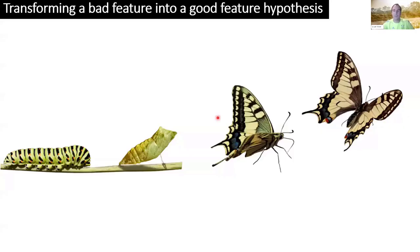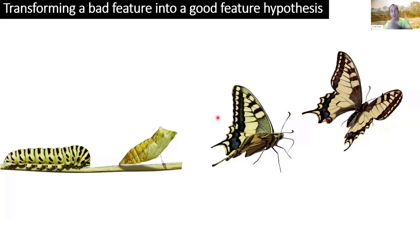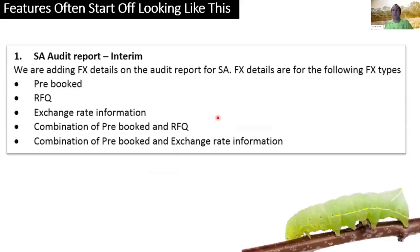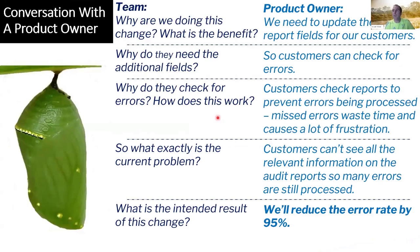On to part two. I want to illustrate how we can transform a bad feature into a good hypothesis — like an ugly caterpillar of a feature transformed into a butterfly. On screen is an example of what I'd call a bad feature. No one on this call would understand what this team is trying to do — and most of the people in the room when I ran the exercise, even those on the team about to build it, didn't know what it was about either. Luckily the product owner was in the room, so we had a discussion.